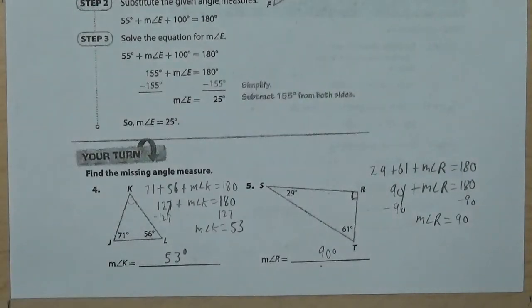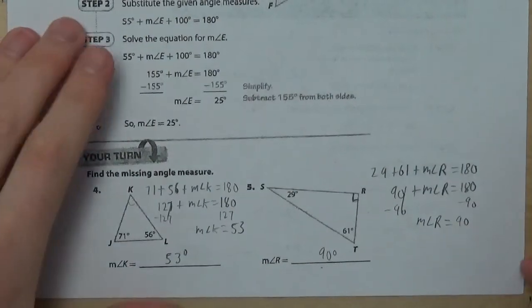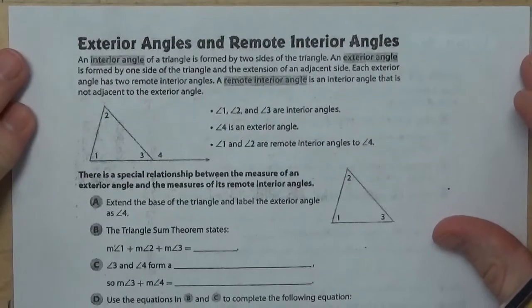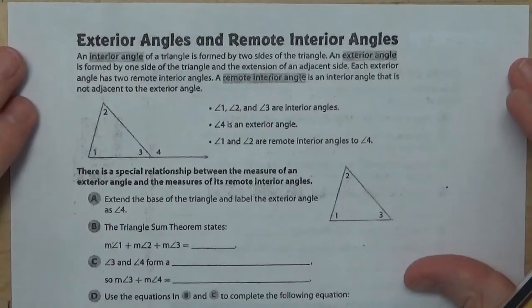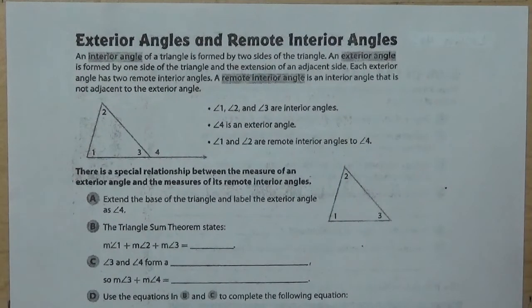That's the Triangle Sum Theorem. We can find the missing measurement of an angle as long as we know the other two measurements — just subtract them from 180. Now there's another one that's a little more complicated: it's about exterior angles and what are called remote interior angles.